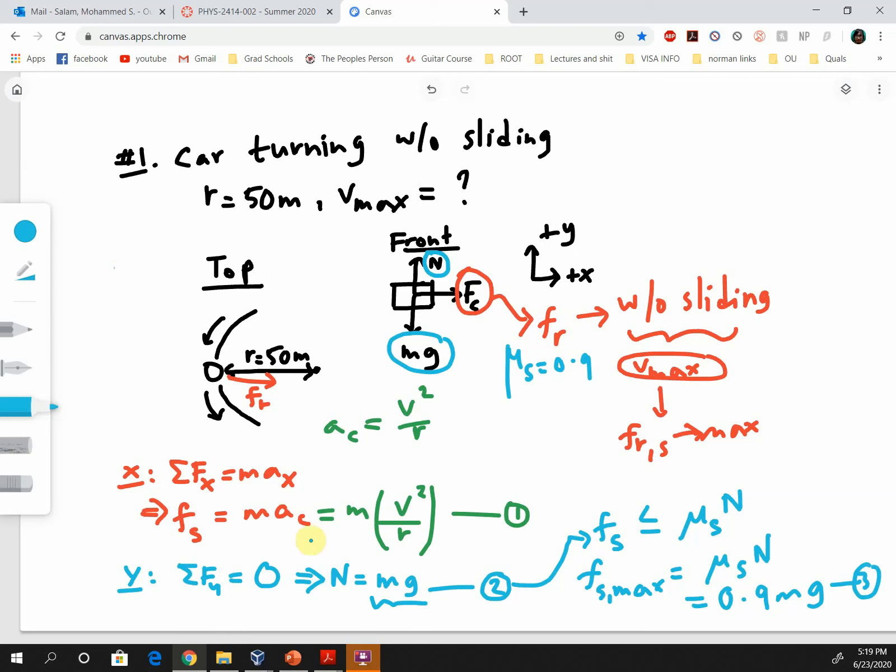Now wherever you see Fs, replace it with 0.9 mg. We can see Fs in equation 1, so in place of Fs we plug in 0.9 times mg. So we have 0.9 times mg equals m times v squared over r. However, we didn't know the mass of the car, but it turns out we didn't need it. Since both sides of the equation have the same mass, we can divide them out. So the masses go away.